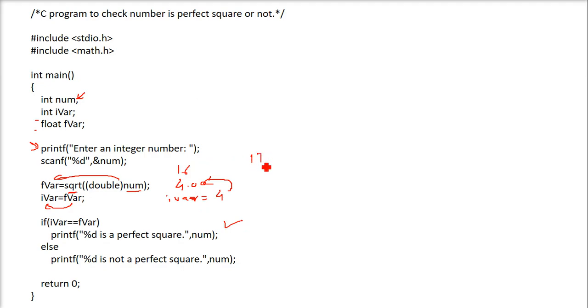If in case we would have given 17, the double would have come say 4.13 type something. 4.13 will be stored here and we will assign this to integer, so 4 will be stored in this i var. Now we will compare this 4 and 4.13, since they are not equal, it will not be a perfect square.